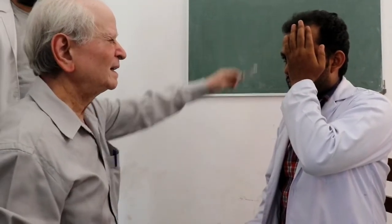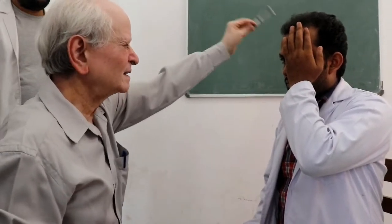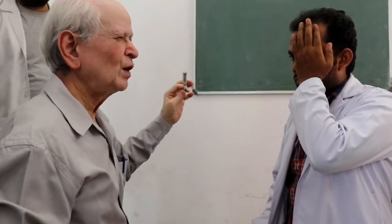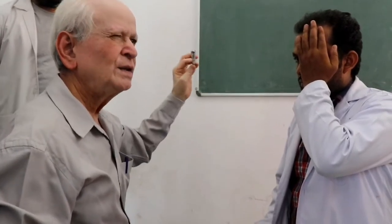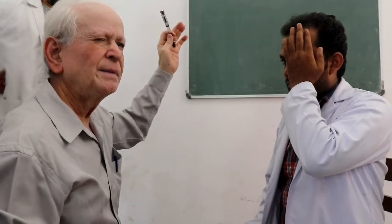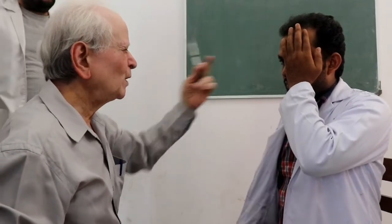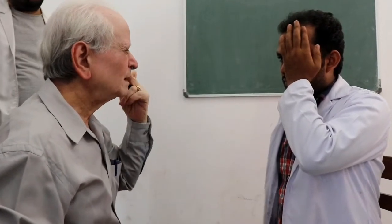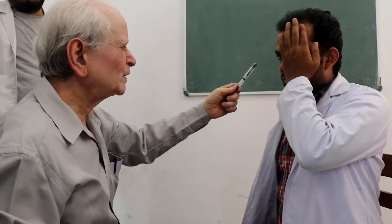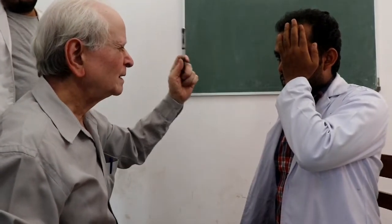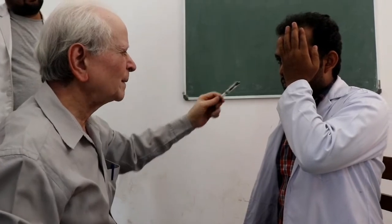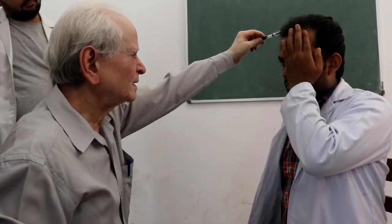After closing the right eye, start the test. Tell the patient: as soon as you see the object, raise your hand. Keep on watching, looking at my eye. I will be observing the movement of his eye to ensure he is not moving it while doing the test.